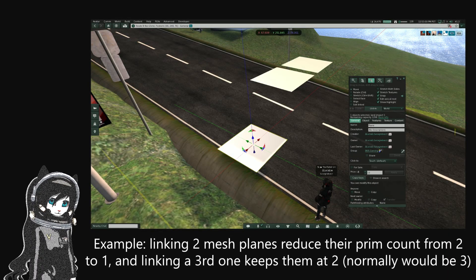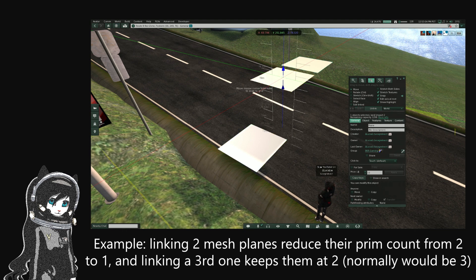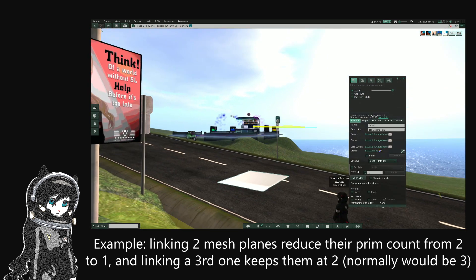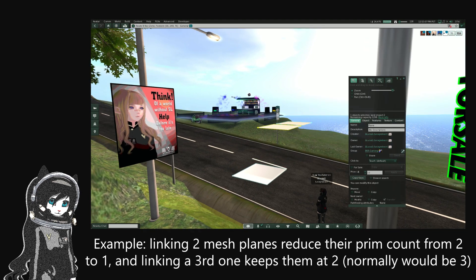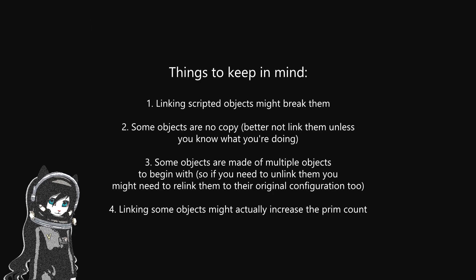Basically, if you have mesh objects, the total prim count of those objects can be reduced by linking them through the edit tools. But you have to keep certain things in mind, because if you link scripted objects they might break, and some objects are no copy and are made of multiple objects to begin with, and sometimes linking certain objects might actually increase the prim count instead of reducing them.